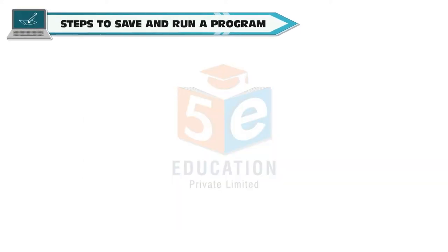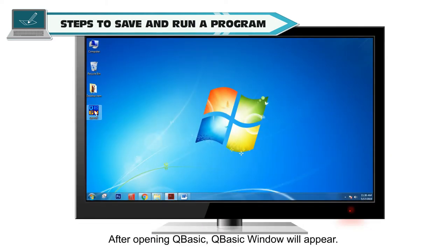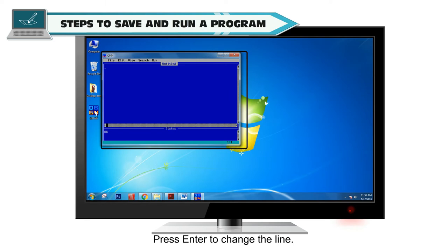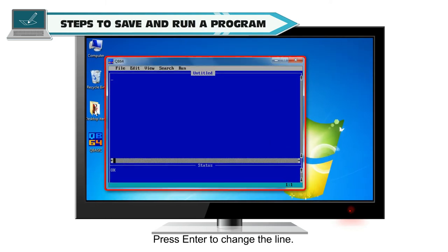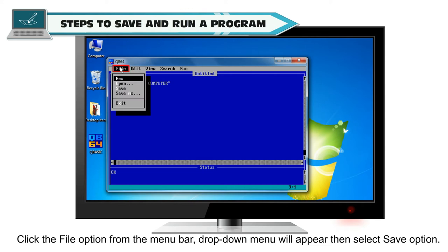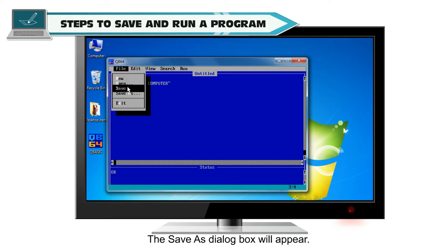Steps to save and run a program: After opening QBASIC, QBASIC window will appear. Type the program in the window. Press Enter to change the line. CLS, Print I am Computer, End. To save and run your program, click the File option from the Menu Bar. Dropdown Menu will appear. Then select Save option. The Save As dialog box will appear.